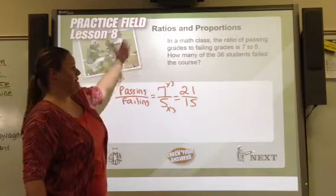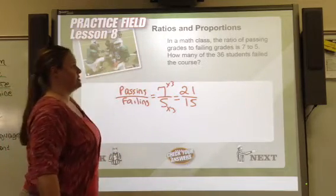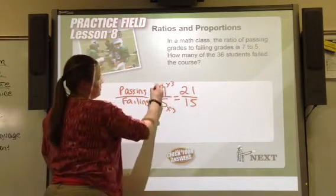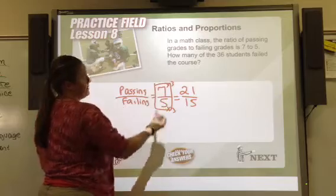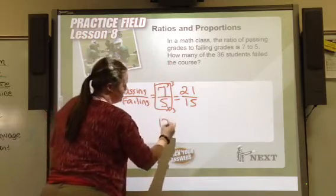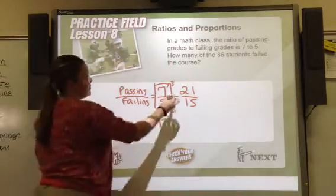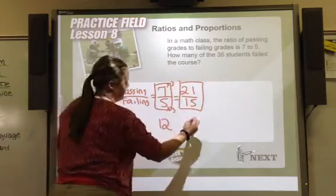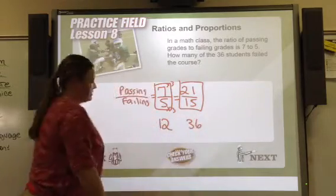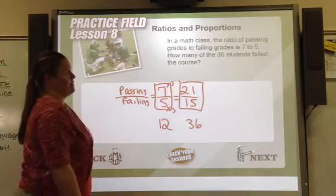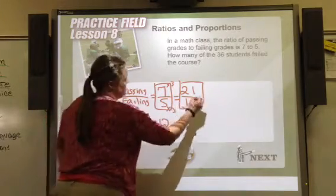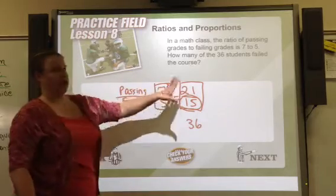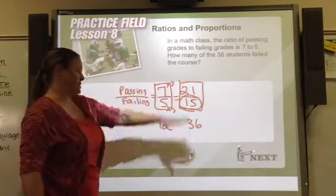The question asks: how many of the 36 students failed the course? Adding seven plus five gives the original 12 students. Adding 21 plus 15 gives 36 students — that matches. So 15 students failed. That's just increasing the relationship until you reach 36 total students.